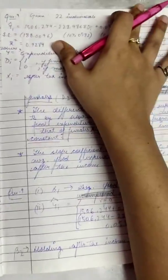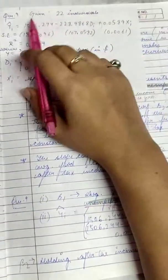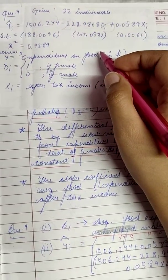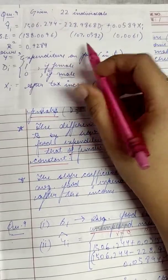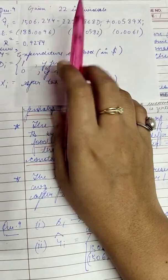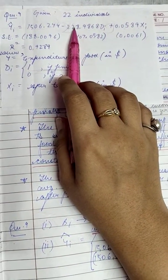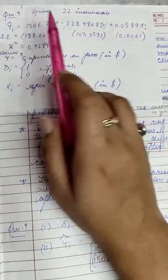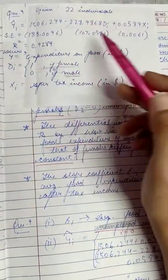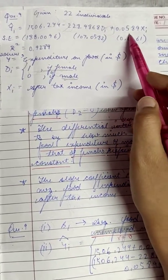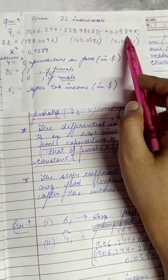The next part asks: what is the marginal propensity of food consumption holding gender difference constant? Gender difference is accounted for by the dummy variable Di. If we hold it constant, the marginal propensity to consume — the change in consumption due to change in income — is given by beta 3, which is 0.0589.